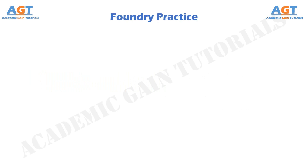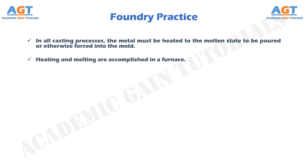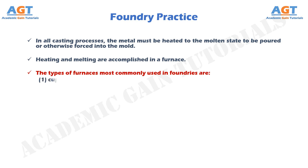In all casting processes, the metal must be heated to the molten state to be poured or otherwise forced into the mold. Heating and melting are accomplished in a furnace. The types of furnaces most commonly used in foundries are: